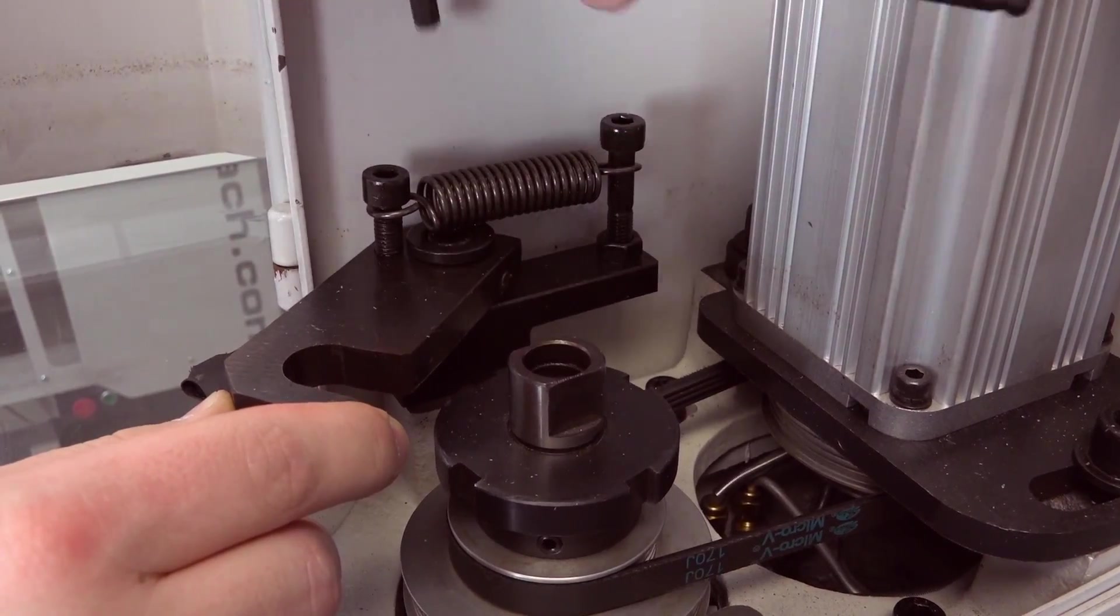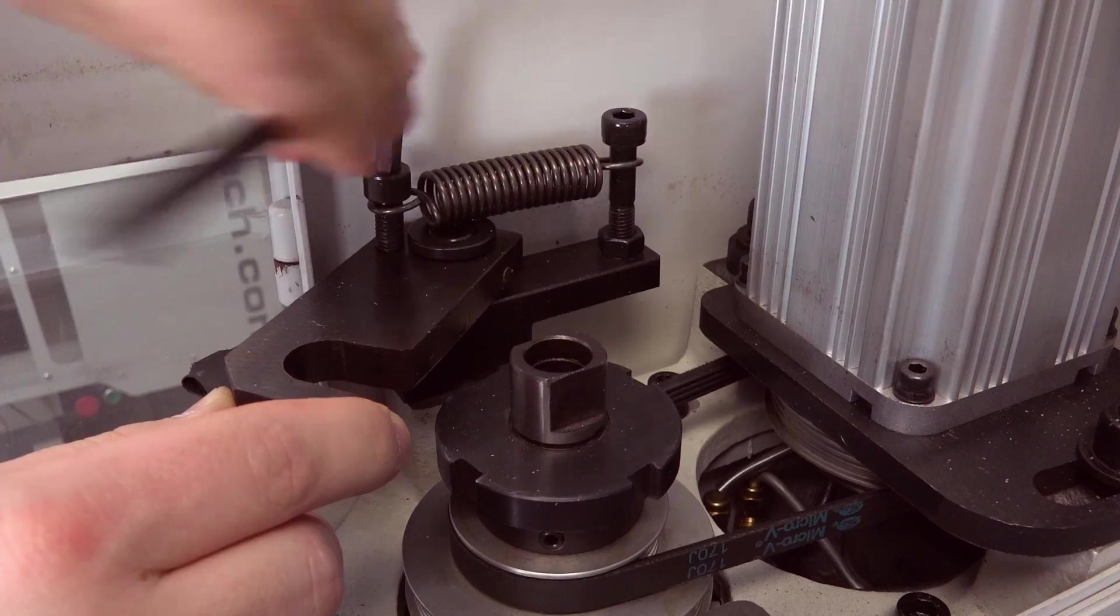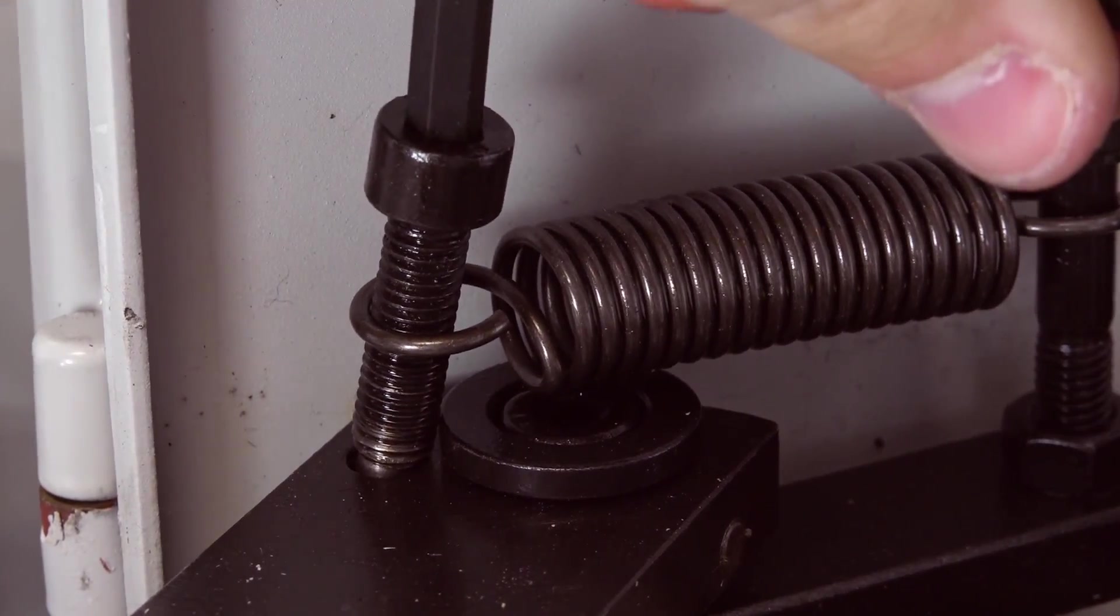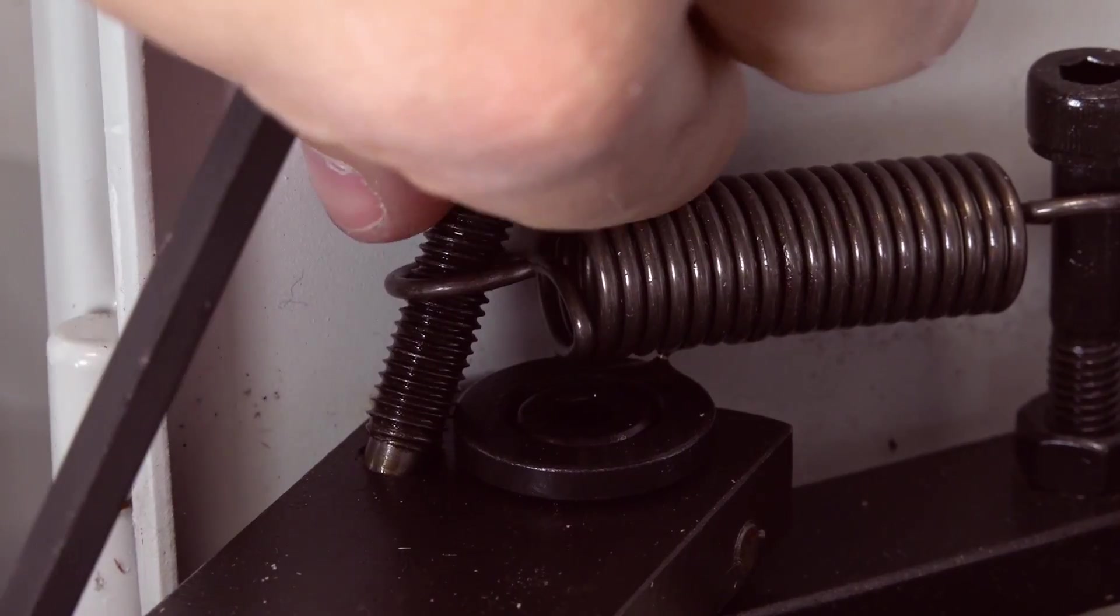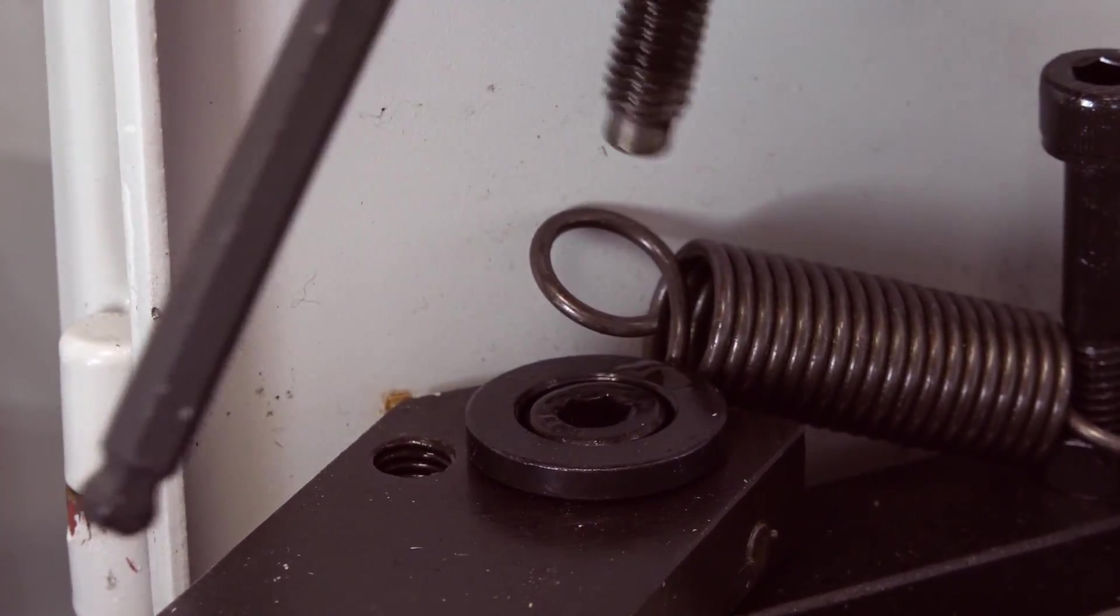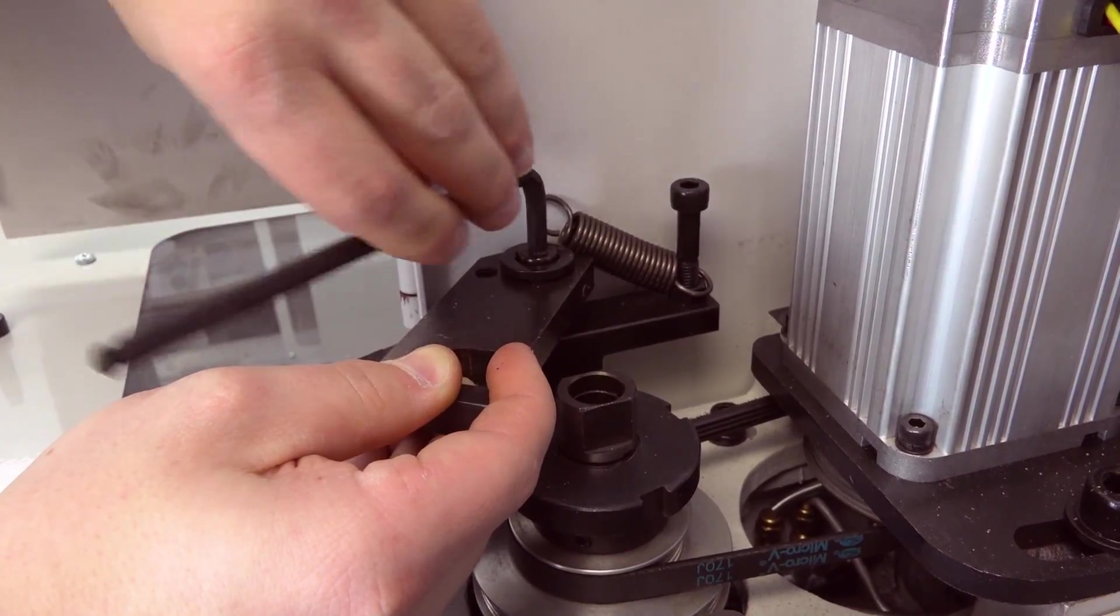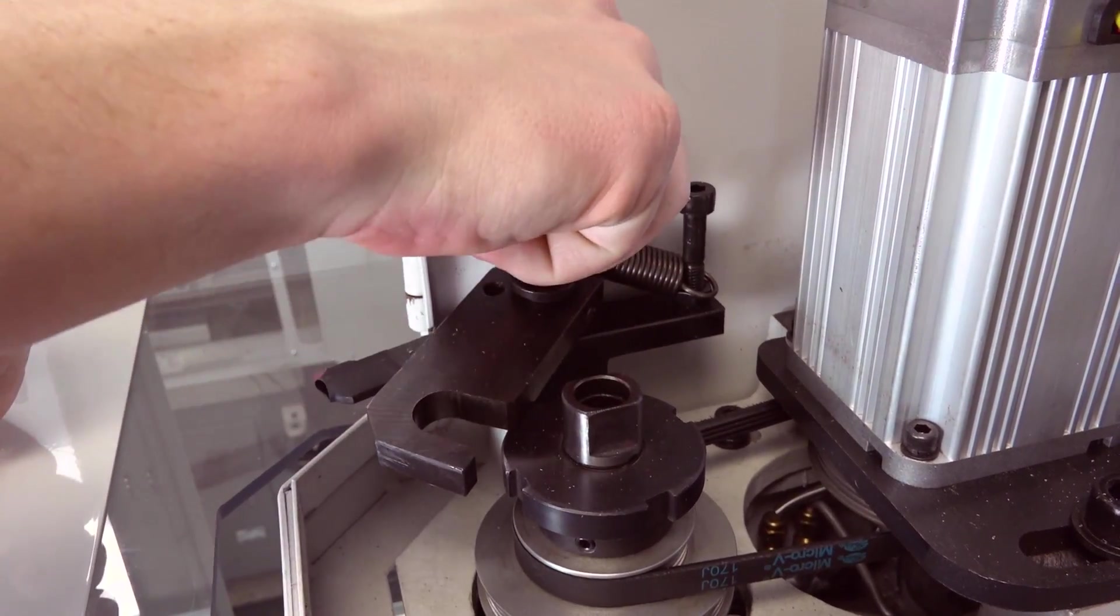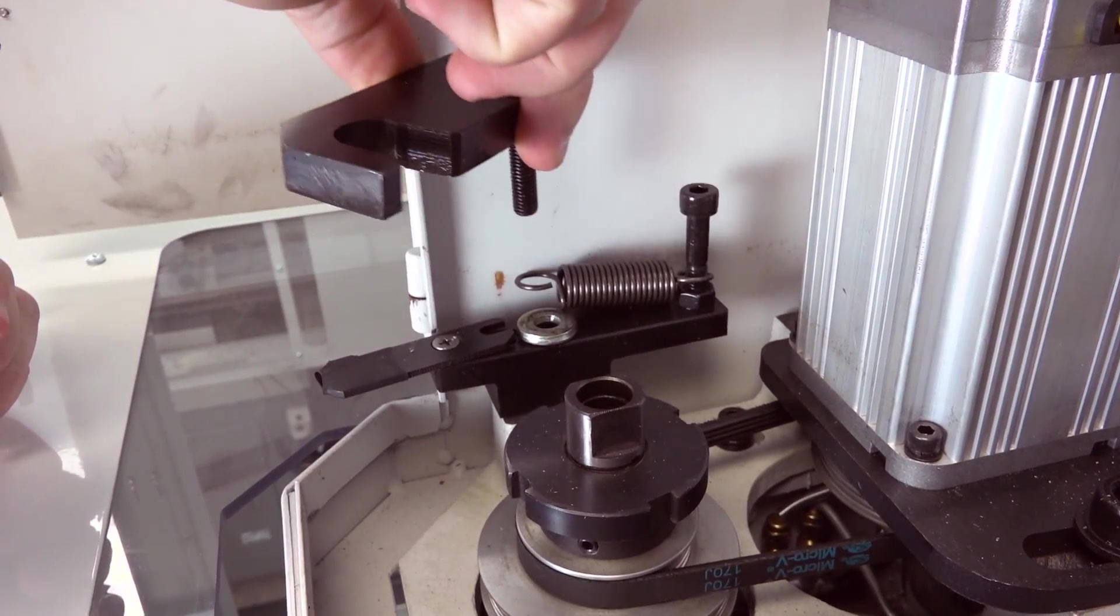Use a 6mm hex wrench to remove the socket head cap screw securing the spindle lock. The spring can be moved to the side. Set the socket head cap screw aside. Use a 5mm hex wrench, remove the bolt on the spindle lock block. Set the bolt, spindle lock, and washer aside.